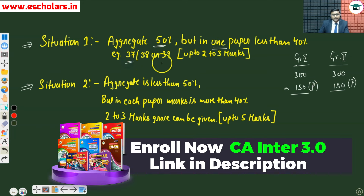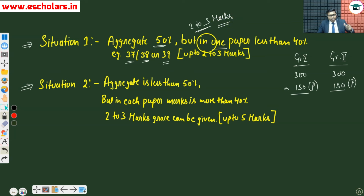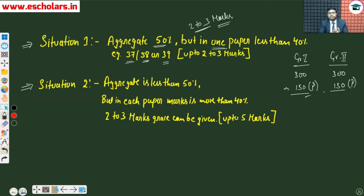But in any one paper, you have 37, 38, or 39 marks. So the institute can allow you two or three grace marks in that paper. With the help of this, you will clear that paper and the aggregate will also be made to 150. It was a very simple situation — but here, only one paper should be in this condition.